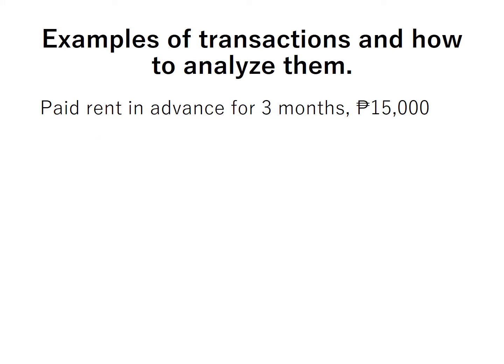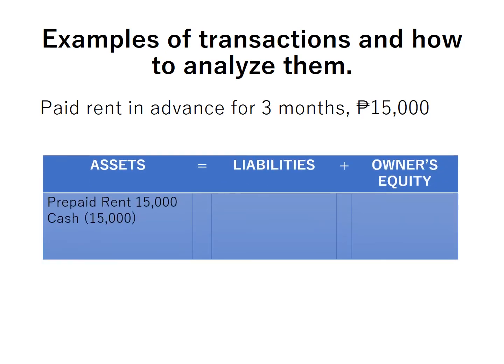Next transaction: the business paid rent in advance for 3 months, 15,000 pesos. The first account affected is prepaid rent — used to record any advance payment of rent. The other account affected is cash. Prepaid rent increased by 15,000 pesos because the business paid rent in advance for 3 months. Cash decreased by 15,000 pesos. Just like the previous transaction, only asset accounts are involved — an increase in one asset and a corresponding decrease in another asset.